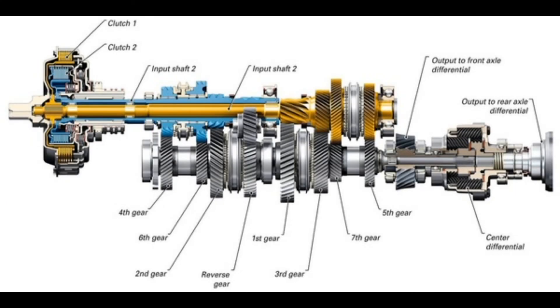A gearbox is a transmission device which is used between the engine's output shaft and the final drive in order to transfer required torque and power to the wheels of the vehicle.